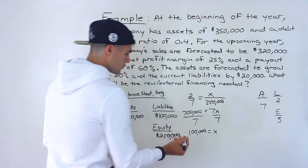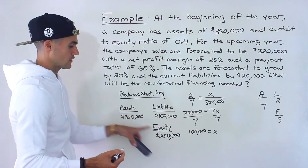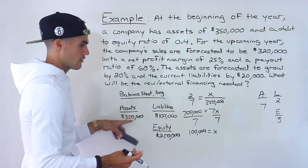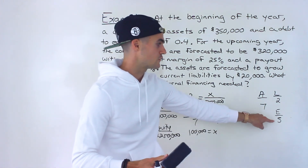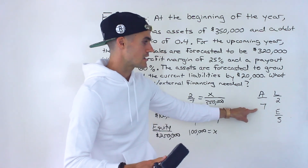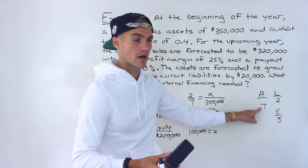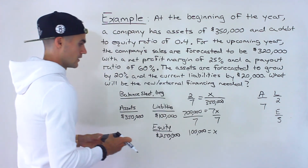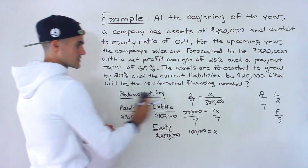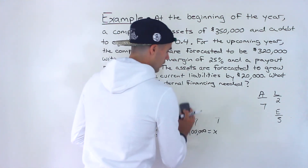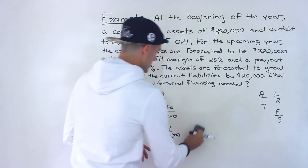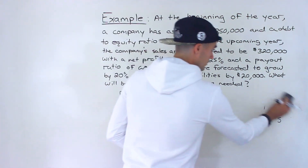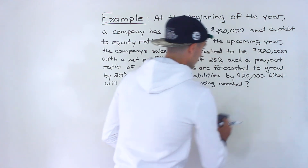Finding the equity is straightforward — it's the difference between assets and liabilities: $350,000 minus $100,000 equals $250,000. As a check, $250,000 divided by $350,000 equals 5/7 or 1/1.4, which confirms the numbers are correct.